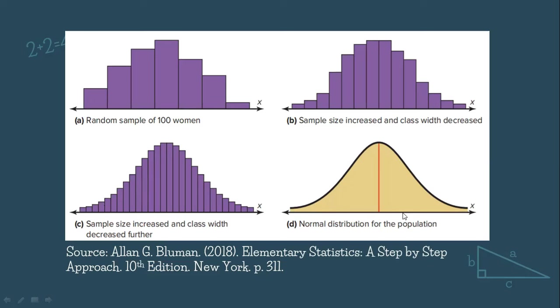Until it reaches this normal distribution for the population. Clear? This is the difference of the normal distribution curve and also the histogram. Because here, the histogram is discrete, meaning these are the ones we can still count. But when we can no longer count, because it is already the population, so we use the normal distribution curve.